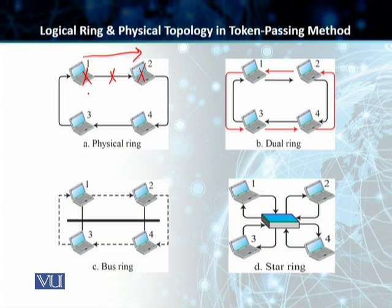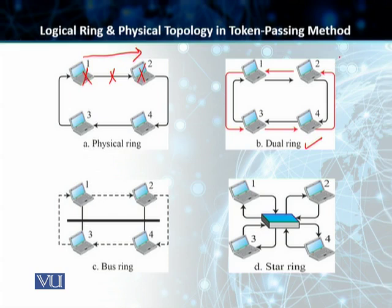To avoid this, we get to the second topology — the dual ring. In this case, there is a second auxiliary ring that operates in the reverse direction compared to the main ring, and it is only used in emergencies. The red ring is only used when the main ring fails. This dual ring technology is used in high-speed token ring technologies such as the Fiber Distributed Data Interface (FDDI) and the Copper Distributed Data Interface (CDDI).